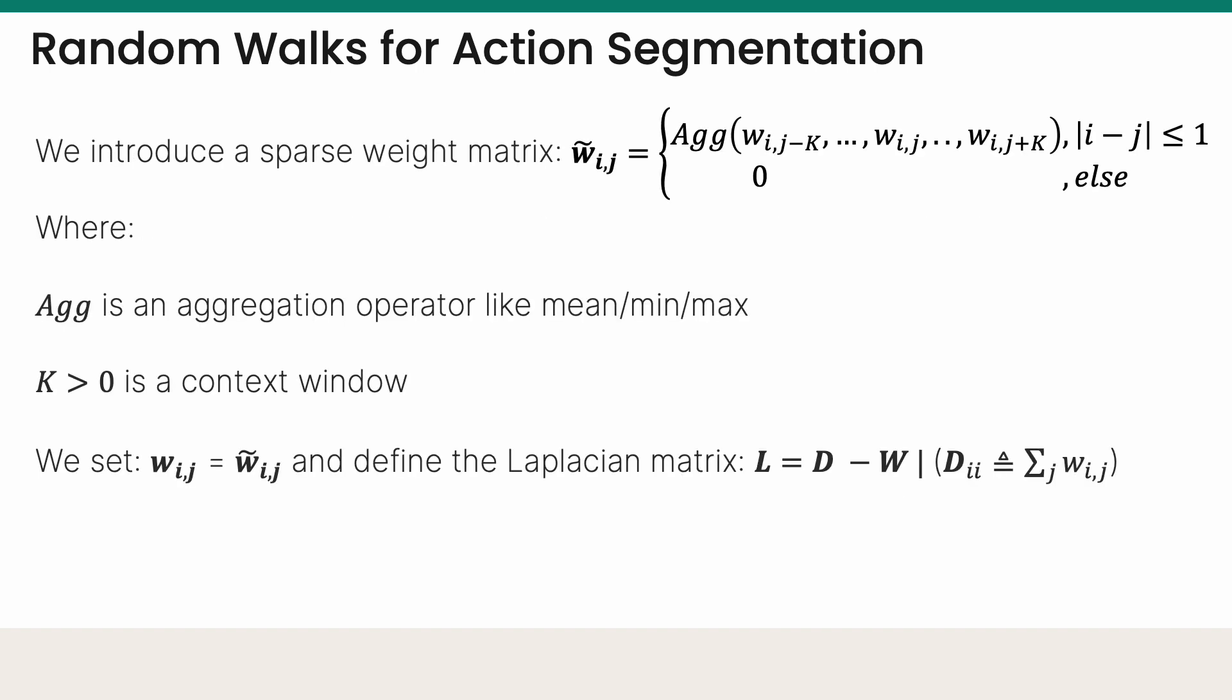Next, we define a sparse version of the weights matrix, where we only consider edges between consecutive frames. To increase robustness, we aggregate the weights of k-neighboring frames to determine the edge's weights.